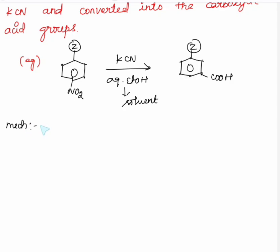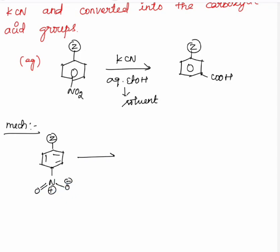Mechanism: Aromatic nitro compounds — this nitrogen is N double bond O, O minus, here plus. The potassium cyanide provides CN minus which comes to attack at the cine position. Here the attack causes a bond shift, and this double bond O is converted into O minus.